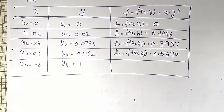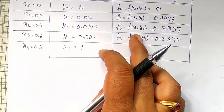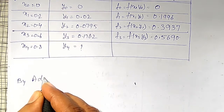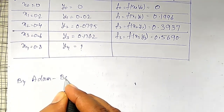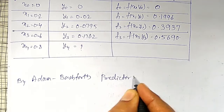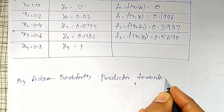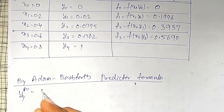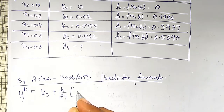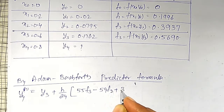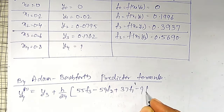Then use these functional values of f to find out y4. By Adam Bashforth predictor formula: y4 predictor is equal to y3 plus h/24 into (55 times f3 minus 59 times f2 plus 37 times f1 minus 9 times f0).